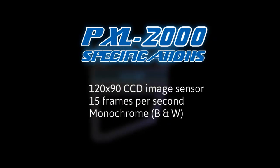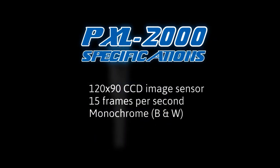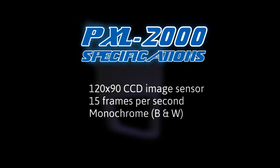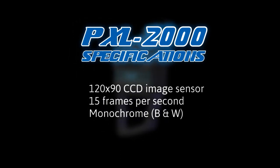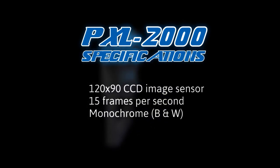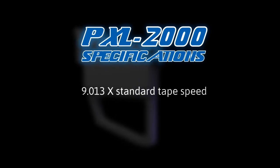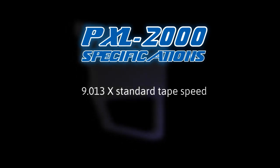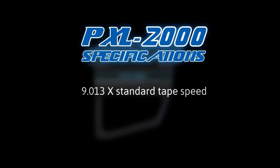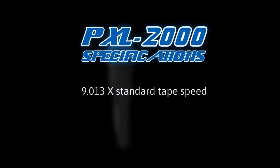This camera records in monochrome at a CCD resolution of 120 pixels by 90 pixels. The PXL-2000 records at right around 429 millimeters per second, or 9 times the tape speed used in a normal audio cassette tape deck. For our purposes, we're going to assume it's exactly 9 times normal speed.